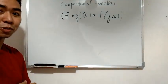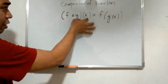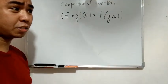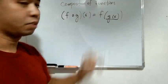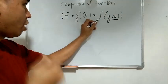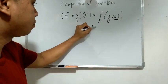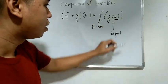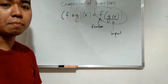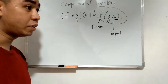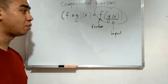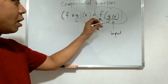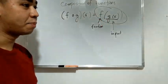We combine two functions here. f circle g of x is the same as f of g of x. At this time, our input is another function, which is g of x. We have function f, and g of x is our input. For the output, it's the whole thing — f of g of x. It is the same as what we did in evaluation of functions, where we replace variable x with a certain number, but this time, we replace x with g of x as the placeholder.